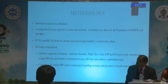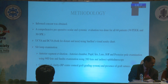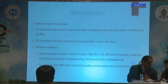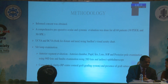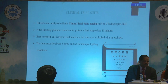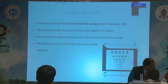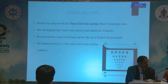Coming to methodology, informed consent was obtained and a comprehensive evaluation was done: uncorrected and best corrected visual acuity, slit lamp examination, corneal graft clarity and presence of graft sutures. The study was done using a clinical trial suite machine. After checking photopic visual acuity, the patient is dark adapted for 10 minutes. The best corrected lens is kept in a trial frame and the other eye is blocked with an occluder.